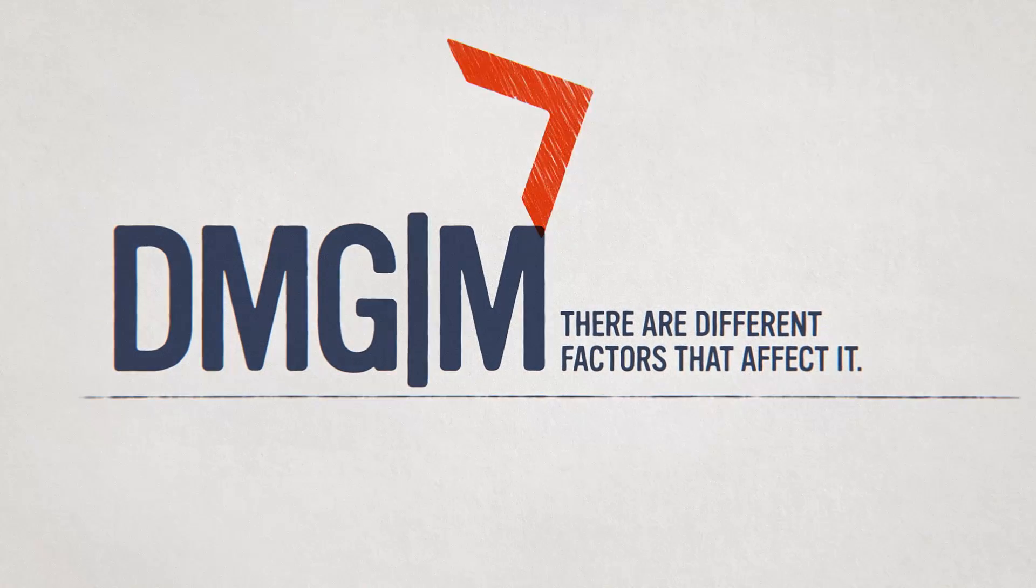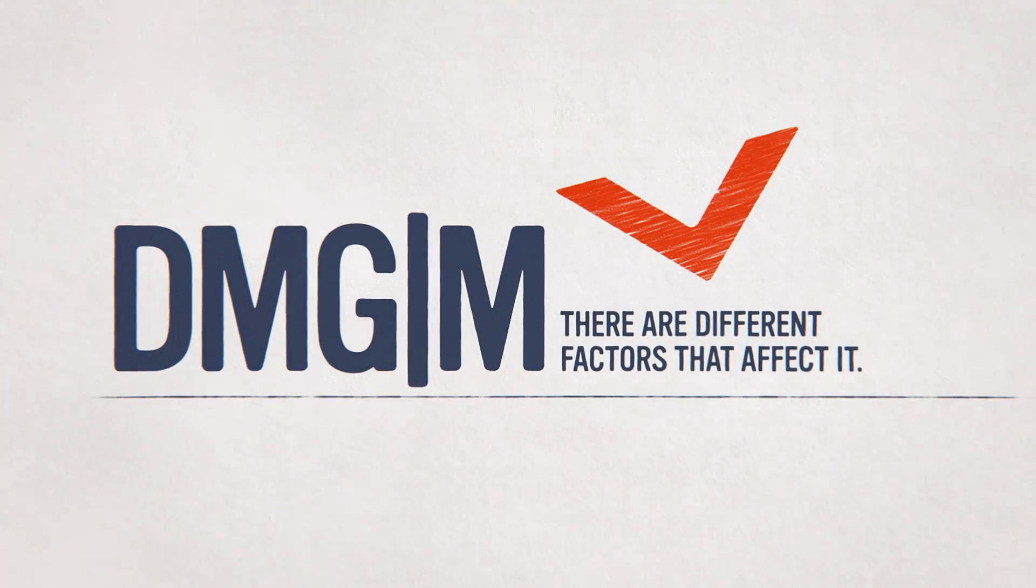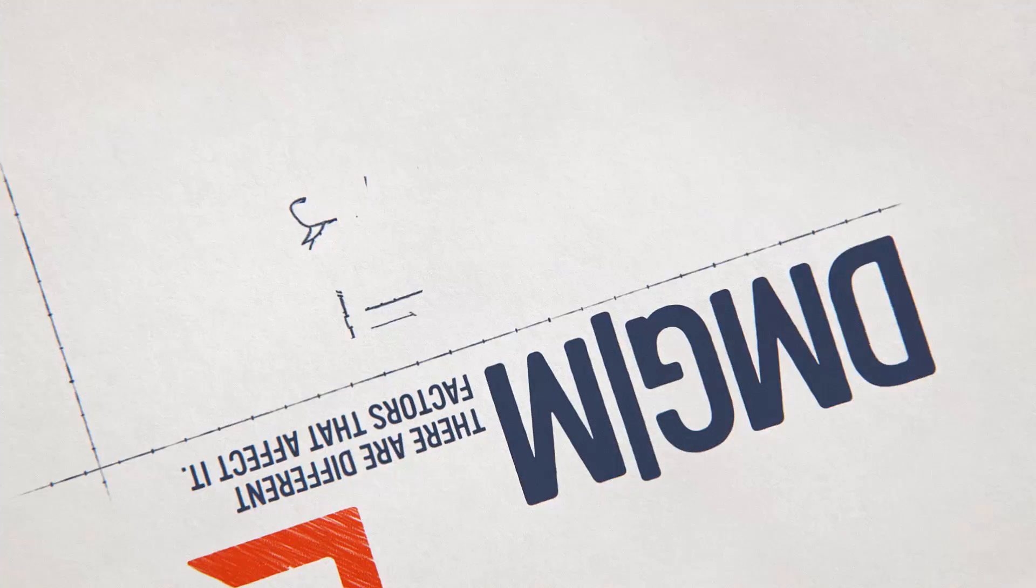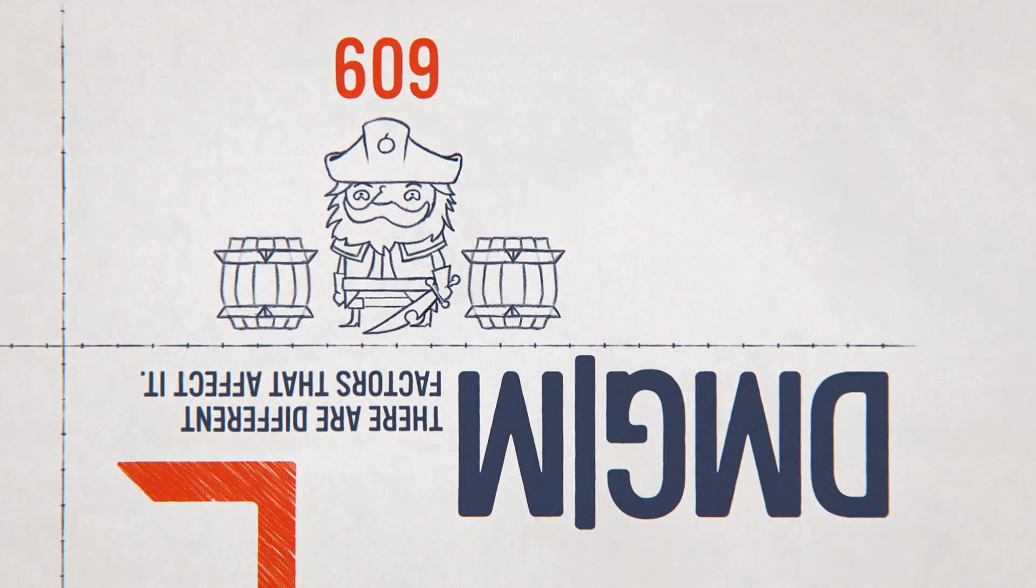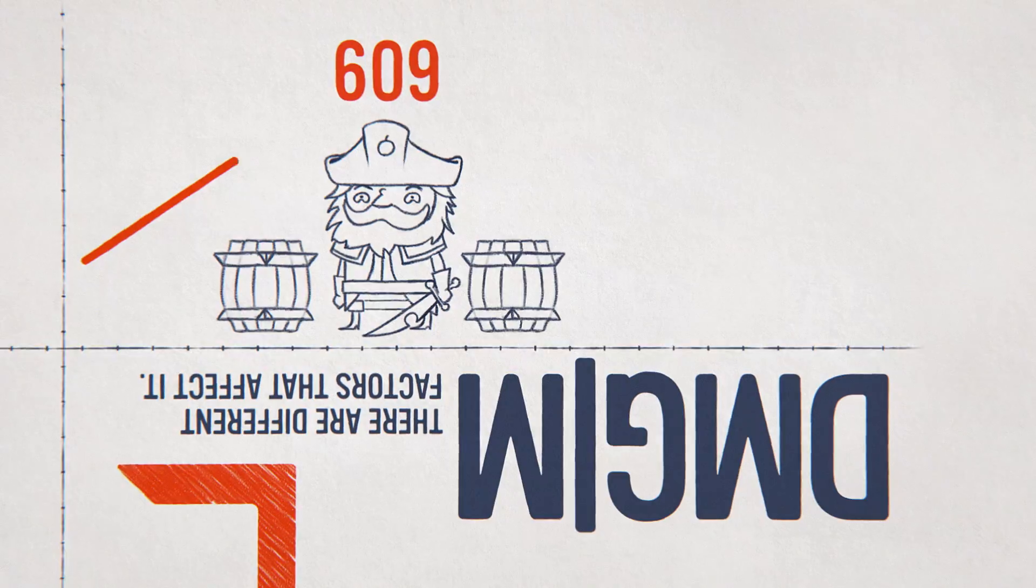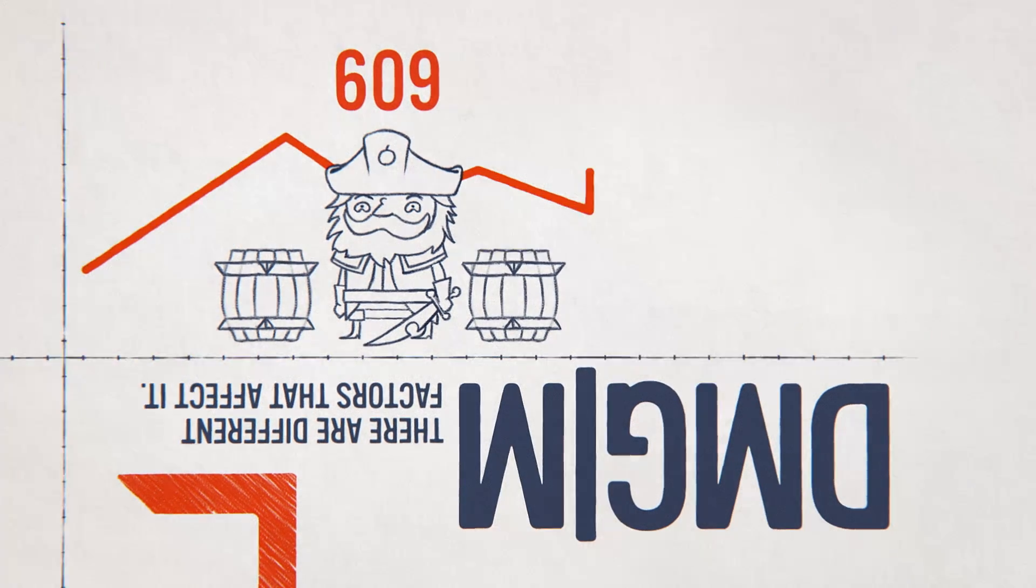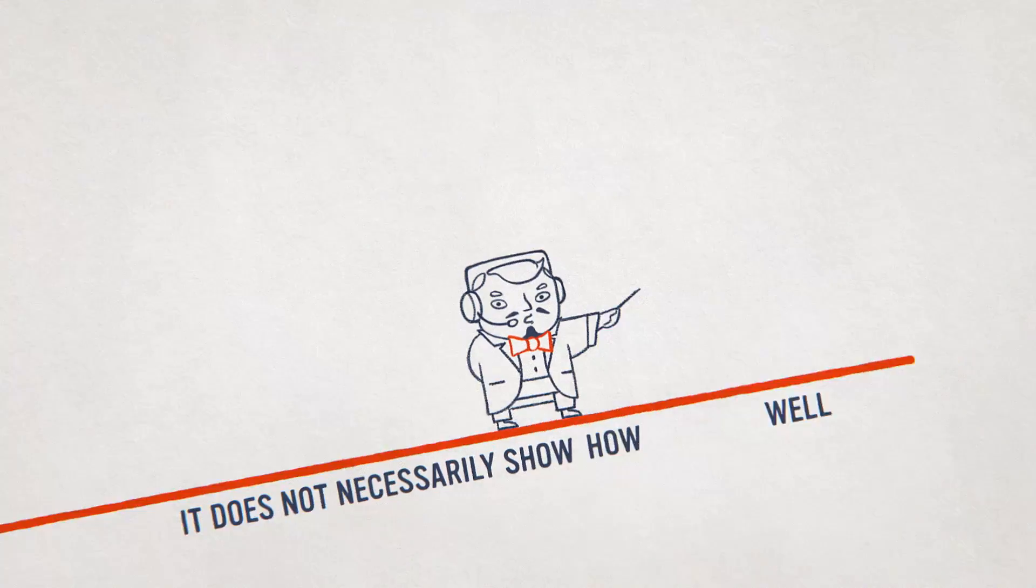In the top lane, there's a huge difference between the highest and lowest damage dealing champions. So say you play a bunch of Gangplank. What are the top laners with the highest DPM? Sometimes the champion you pick and the frequency you play it can skew your numbers upward a whole lot. It doesn't necessarily show how well you're playing.